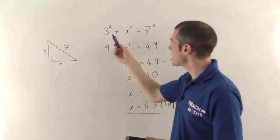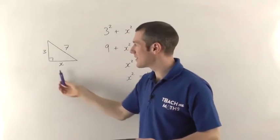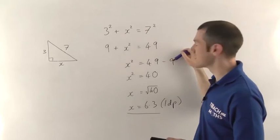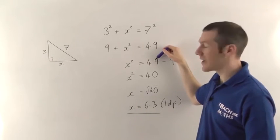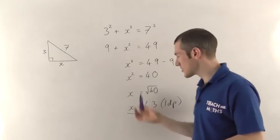So whereas previously, you'd work out the areas of the two shorter sides, the squares, and add them together. Now because you know the length of the bigger one, you have to subtract the area of the smaller square from the area of the big square, and that will leave you with the other one. And then you can square root to find the length.